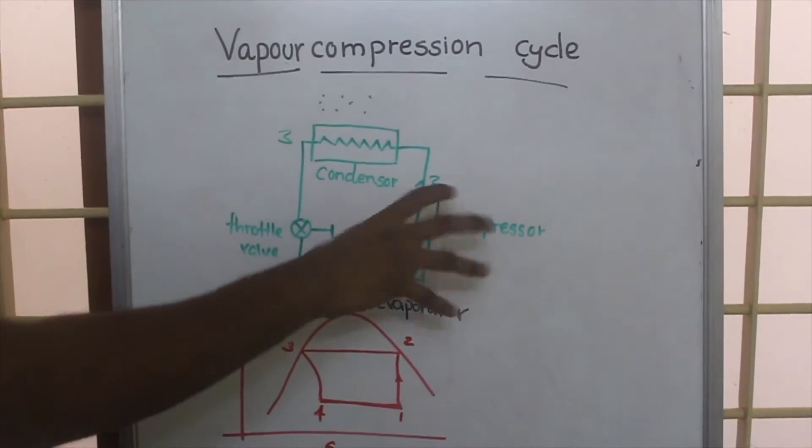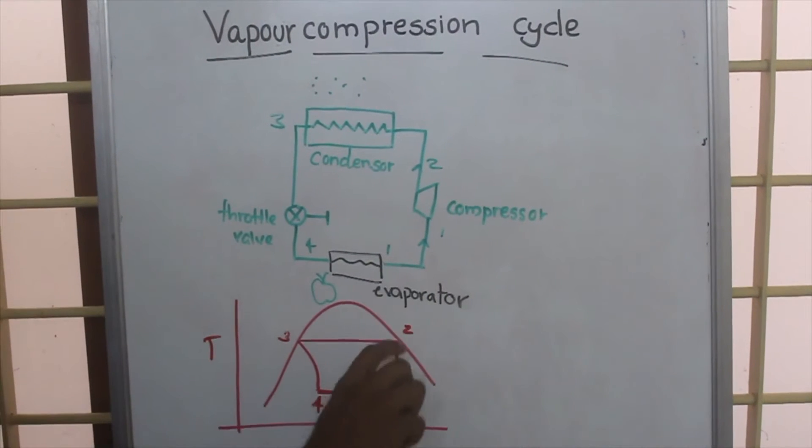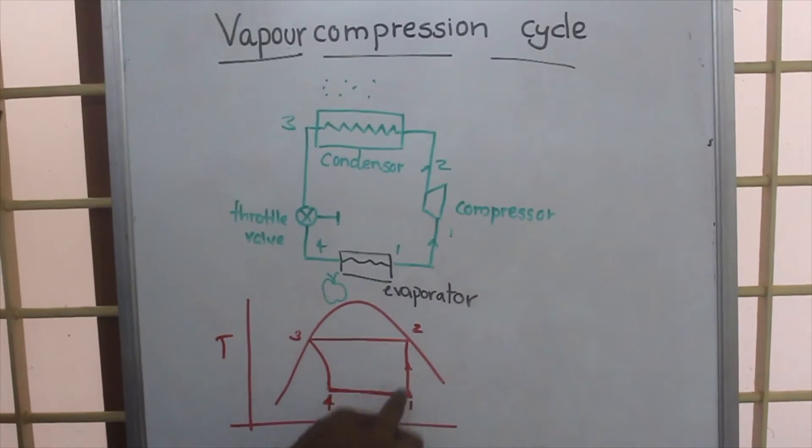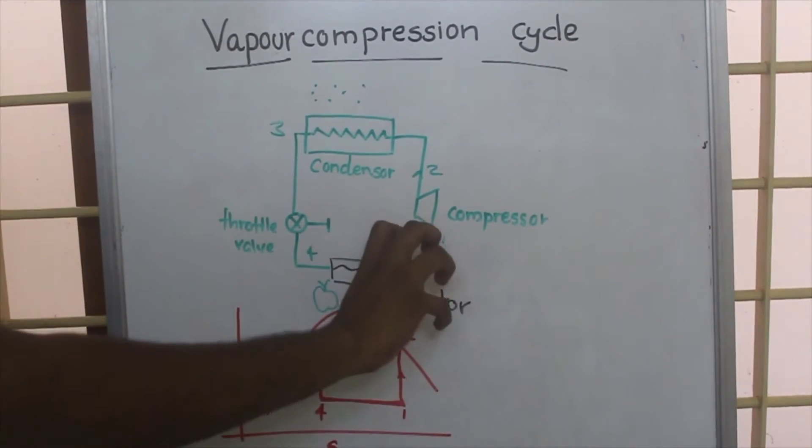In the compressor, this vapor or working fluid is compressed. This represents process 1-2, which is an isentropic process. So in this compressor, isentropic compression takes place.